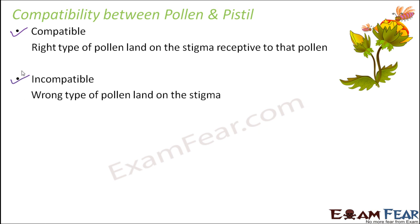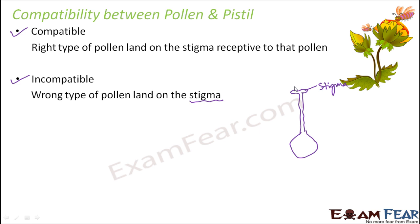Incompatible means the wrong type of pollen has landed on the stigma. The stigma is part of the pistil. If you look at the structure of the pistil, it consists of the stigma followed by the style followed by the swollen ovary. The pollen grains actually fall on this stigma, and the decision has to be taken here whether it is compatible or not.